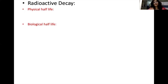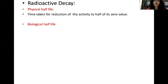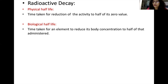Radioisotopes undergo radioactive decay to attain a stable configuration. There are two types of half-lives: physical half-life and biological half-life. Physical half-life is the time taken for the reduction of activity to half of its initial value. Biological half-life is the time taken for an element to reduce its body concentration to half of the administered amount. In medical practice, we are more concerned about biological half-life.